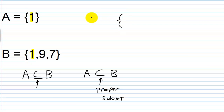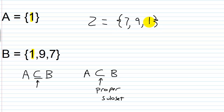If I made a set Z equals {seven, nine, one}, since Z and B contain exactly the same elements — a one and a one, a nine and a nine, a seven and a seven — they are automatically subsets of each other. When you have two equal sets, they're automatically subsets of each other, but they're not proper subsets.